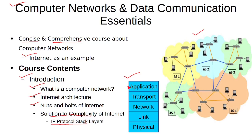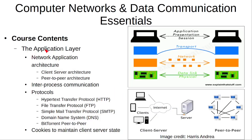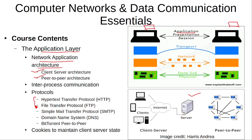We will discuss the protocols used on these layers one by one, starting from the top-most layer and going to the lower layers, as this is the most intuitive approach to understanding computer networks. At the application layer, we will discuss the architecture of a networking application — whether it is a client-server architecture or a peer-to-peer architecture — and how processes on different computers communicate with one another using application layer protocols, including the famous application layer protocols.